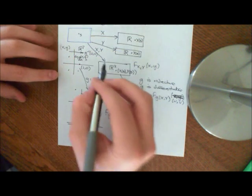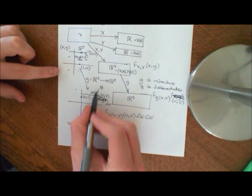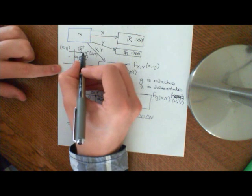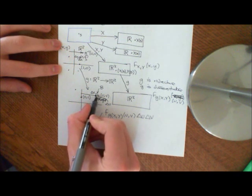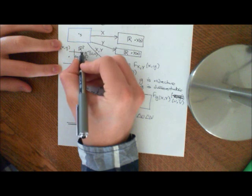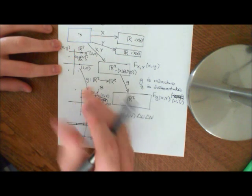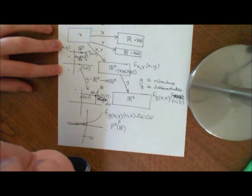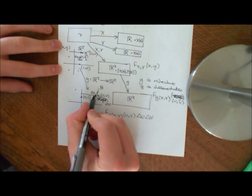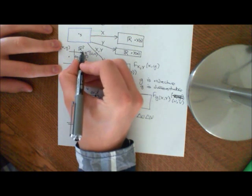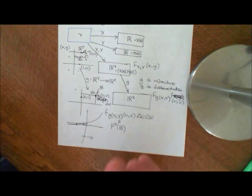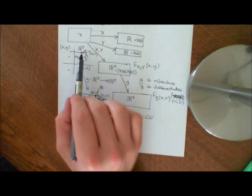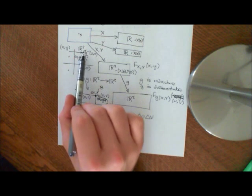If we transform this box back, there is no guarantee that it's going to end up as a box anymore. However, if you make the side lengths of this box very, very small, then approximately this function g — this transformation — will be approximately a linear transformation. So what it will be transformed onto is a tiny little parallelogram, approximately. We need to try and find the area of that parallelogram.